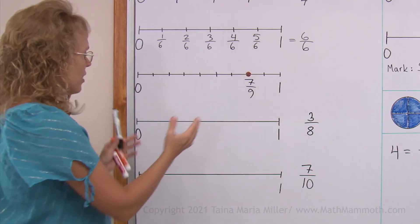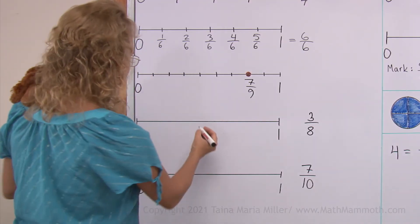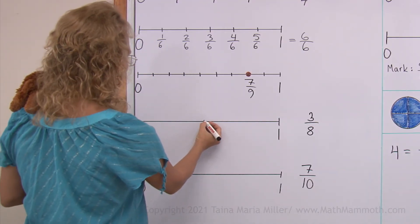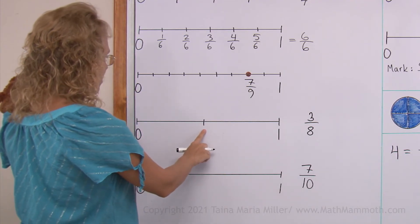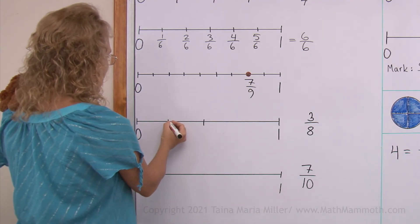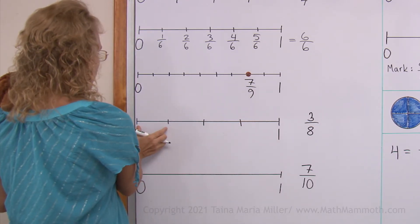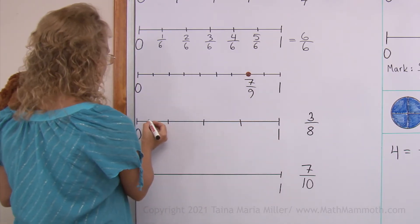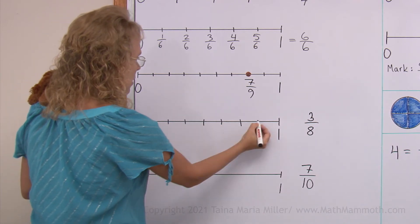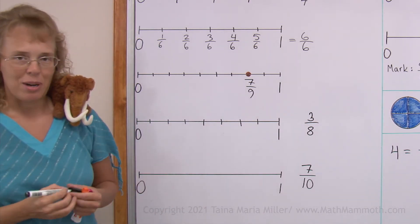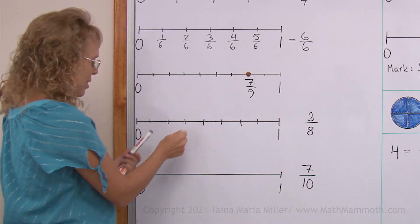Divide this into eight parts. First I will divide it into two parts somewhere in the middle. And then each half I will divide into halves again, so now I have four parts: one, two, three, four. And then each one of these I will split. Now I have eight parts. And then one, two, three — right there.